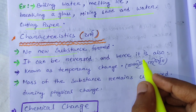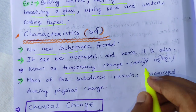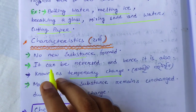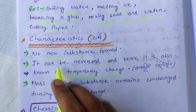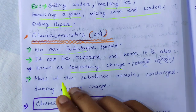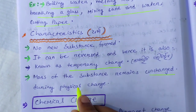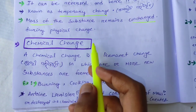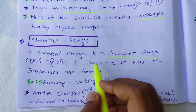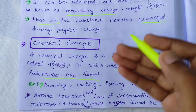A physical change can be reversed and hence it is also known as a temporary change. The chemical composition of the substance remains unchanged during a physical change. It is also known as a temporary change, as opposed to a permanent change.